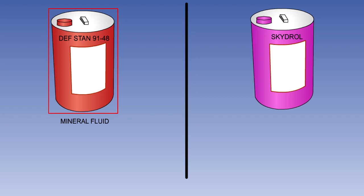DEVSTAN 91-48 is a super clean mineral hydraulic fluid. Recommended for all hydraulic systems operating under high pressures and low or very low temperatures, from minus 54 degrees Celsius to plus 90 degrees Celsius. It is equivalent to H515 NATO, OM15 Joint Service, and MIL-H-5606F in the United States.